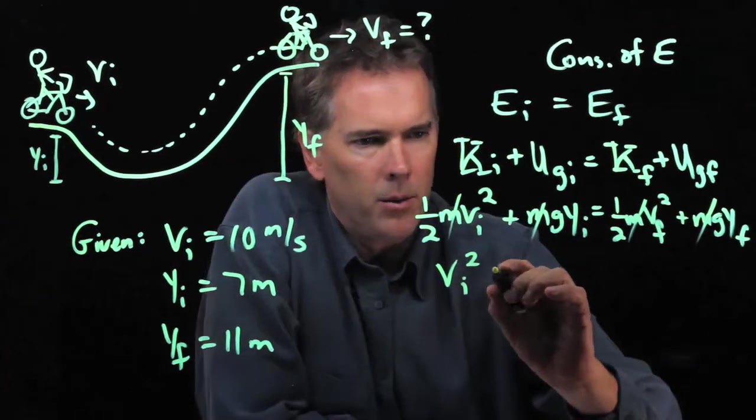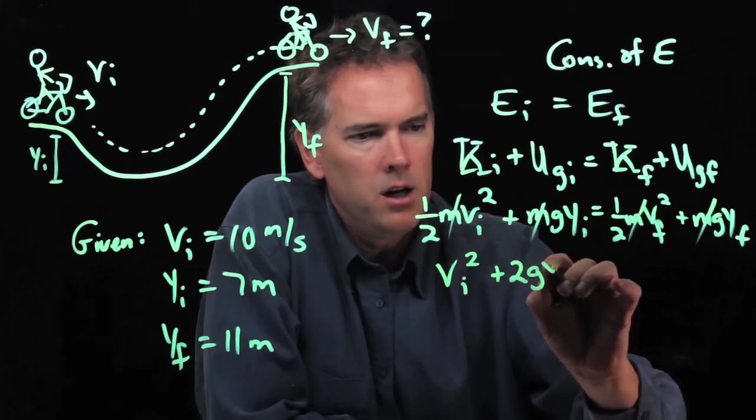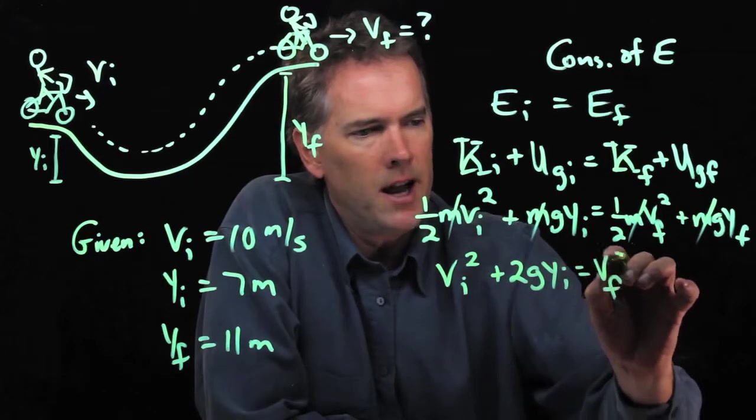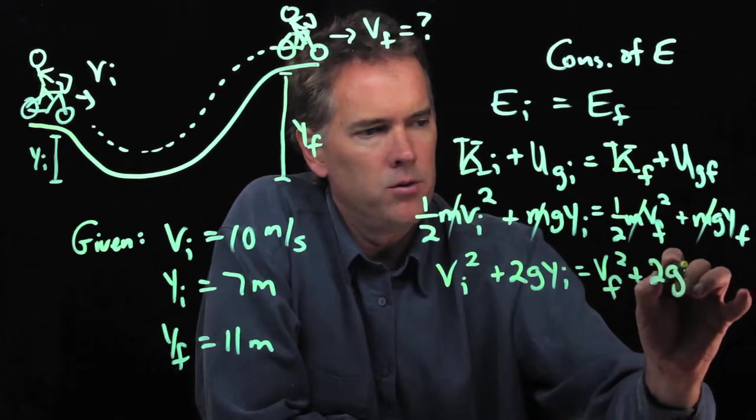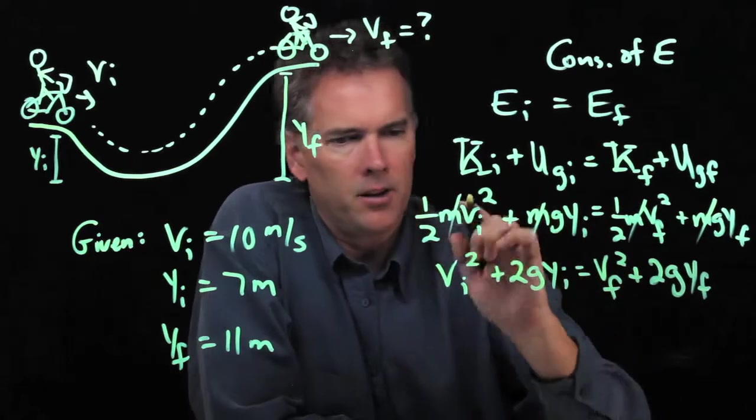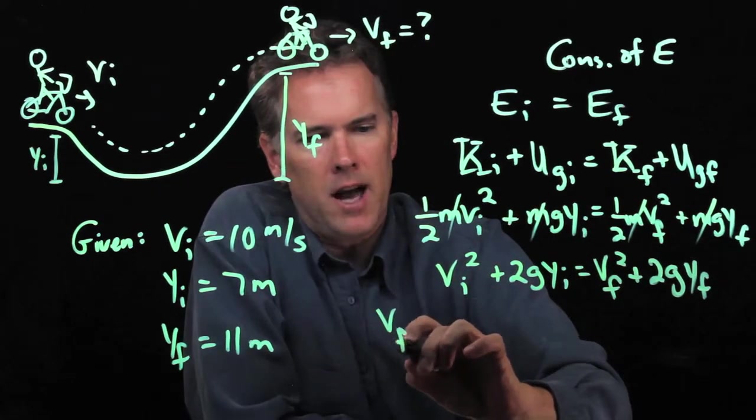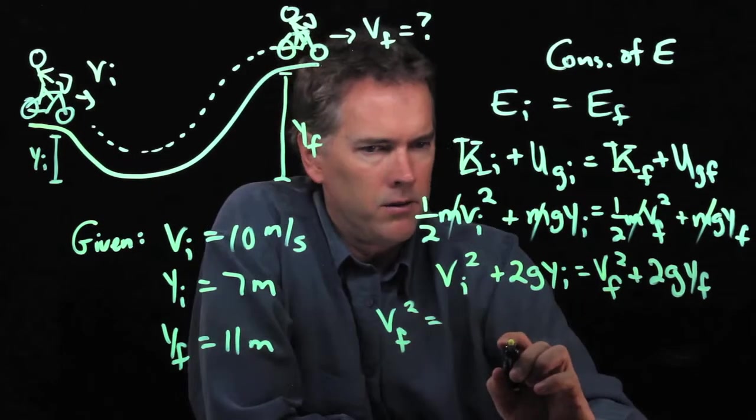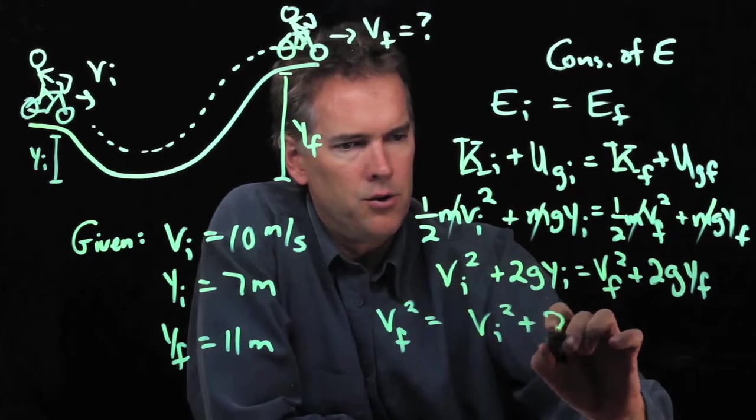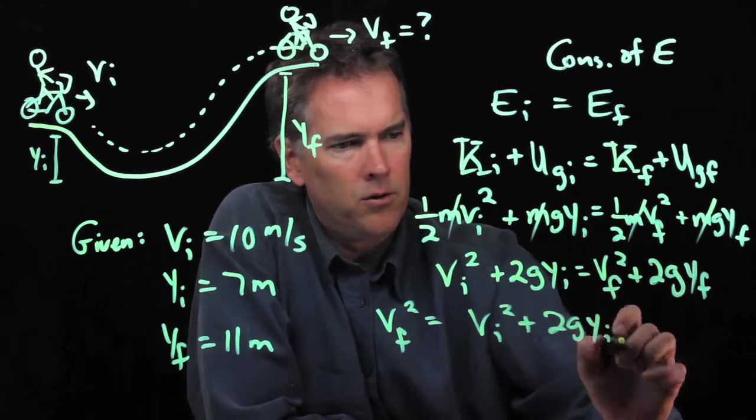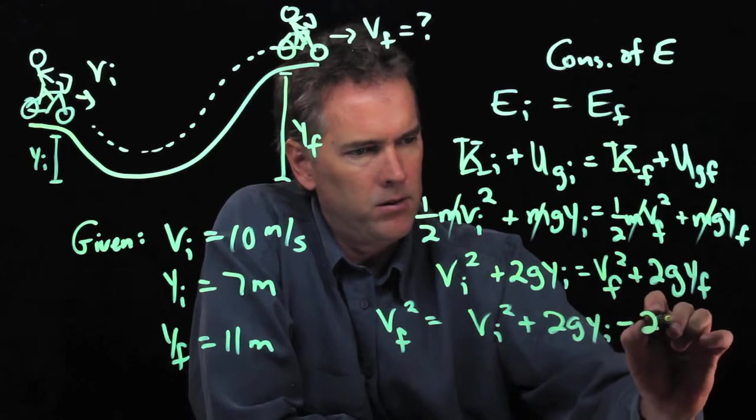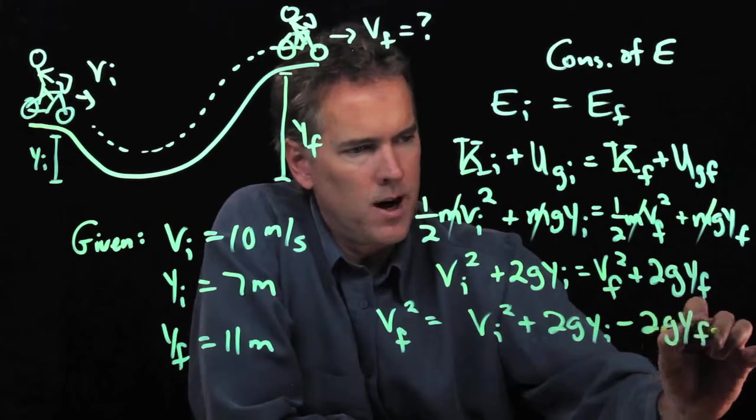We have Vi squared plus 2g y initial equals Vf squared plus 2g y final. And now we can rearrange some terms to isolate Vf. Vf squared is going to be Vi squared plus 2g y initial, and then I need to move this one over to the other side, so that becomes minus 2g y final.